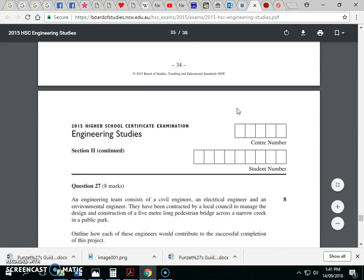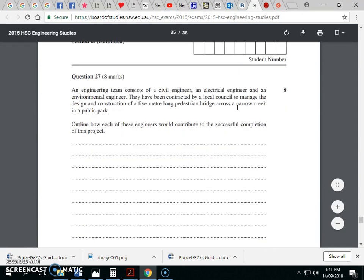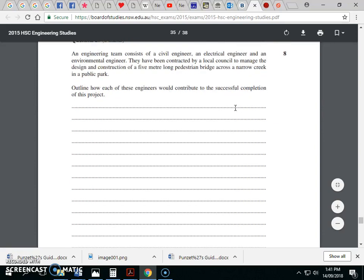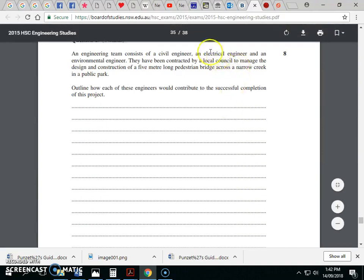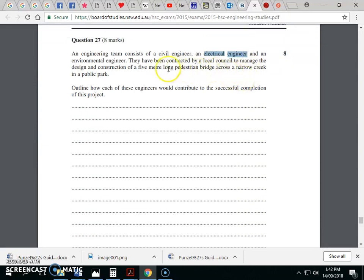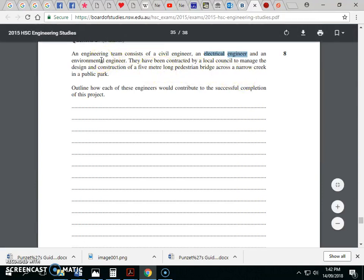An engineering team consists of a civil engineer, an electrical engineer, and an environmental engineer. They've been contracted by a local council. Outline how each of these engineers would contribute to the successful completion of this project. This is eight marks, so it's pretty long. Very quickly: the civil engineer will coordinate things like the geotechnical properties of the ground and understand the materials of the concrete and steel that they use. The electrical engineer will understand things like the power supply. For a pedestrian bridge, the electrical engineer will probably organize things like how we're going to interact with the power on the road and how to do that safely. The environmental engineer will ensure that we do this safely without negatively impacting the environment.